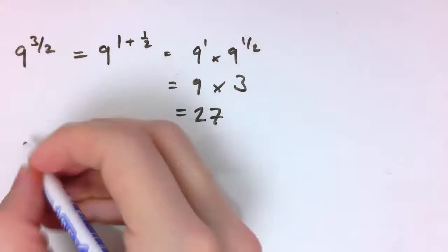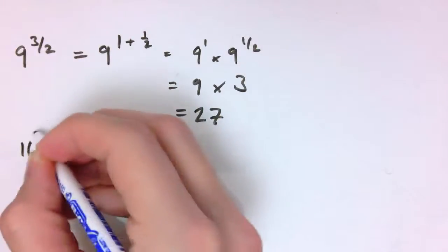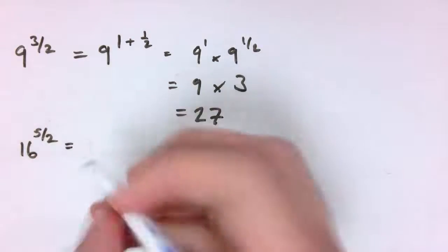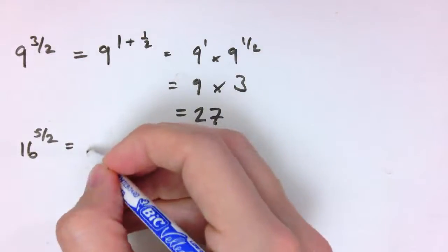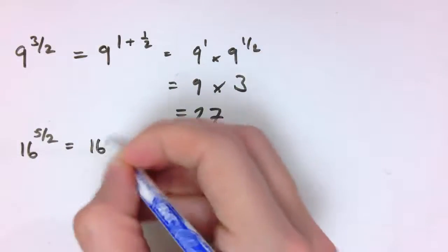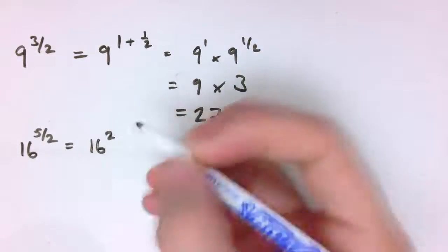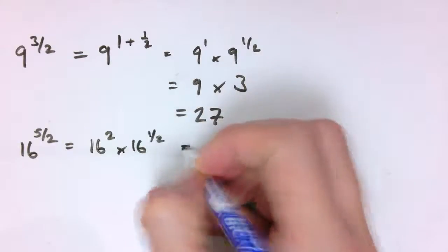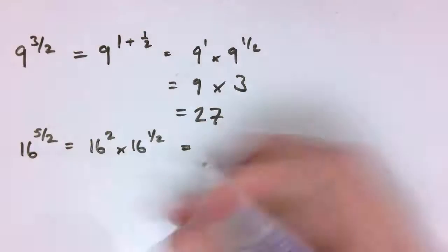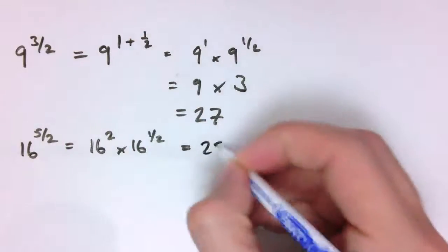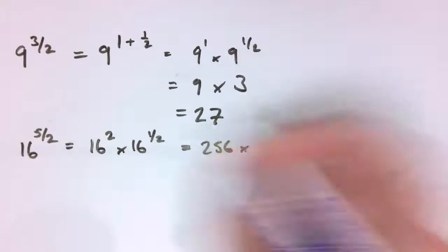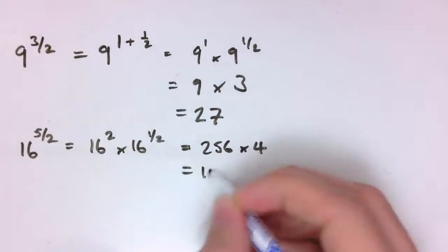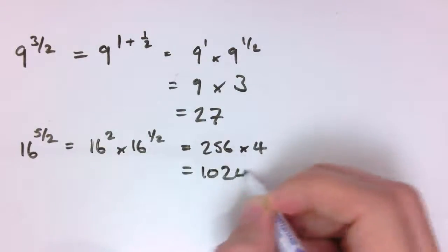If I wanted to do 16 to the 5 over 2, I could say that's 16 to the 2 and a half, so that's 16 squared times 16 to the 1 half, which is 256 times the square root of 16, which is 4, and that gives me 1024.